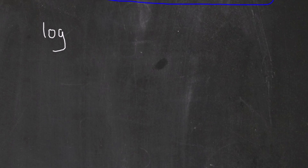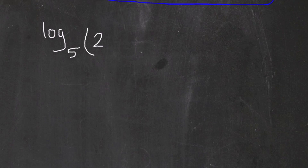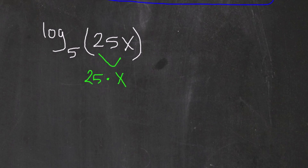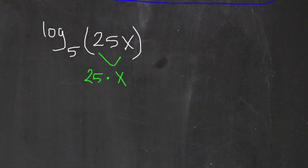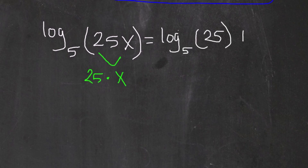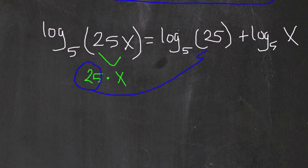Let's go over two brief examples. For the first example, we want to express log base 5 of 25x as a sum or difference of logarithms. Looking inside the logarithm, 25x means 25 times x — they're multiplying — so we use the product property and express this as a sum: log base 5 of 25 plus log base 5 of x.